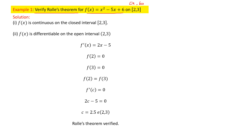Condition one: f(x) should be a continuous function. In lower classes, we learned that all polynomial functions are continuous. This is a polynomial function — it is a quadratic function — so it is continuous. Therefore, the function is continuous on the closed interval [2, 3].